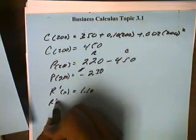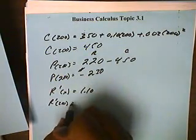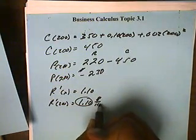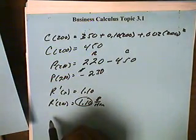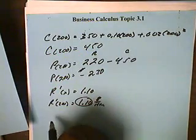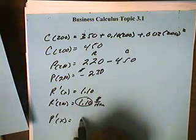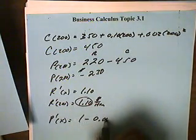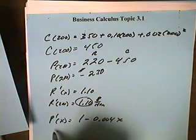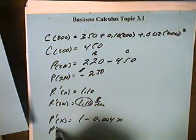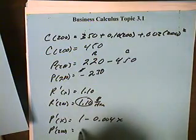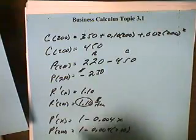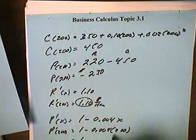And looking for the marginal profit, the marginal profit function was 1 minus 0.004x. So, when we put 200 in here, we get 1 minus 0.004 times 200. And if I have my two zeros here and I move those two zeros, this will be 0.8.